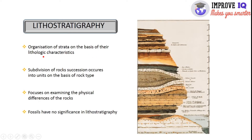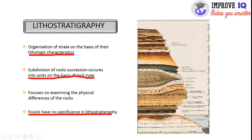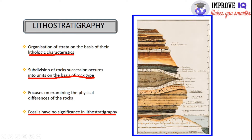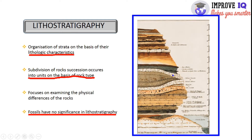Lithostratigraphy is the organization of strata on the basis of lithologic characters — those characters which can be collected physically. In this type of stratigraphy, subdivision of rock succession occurs into units on the basis of rock type only. It basically focuses on examining the physical differences of rocks, and fossils have no significance in lithostratigraphy. Geologists conclude lithostratigraphy by only the physical characters of rock.